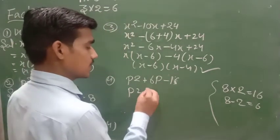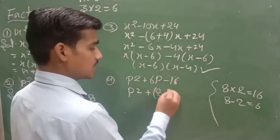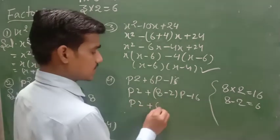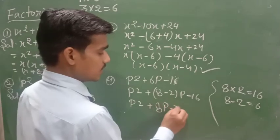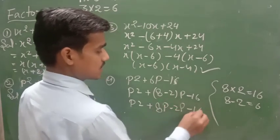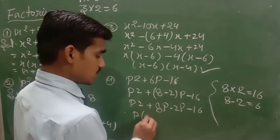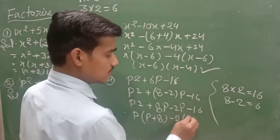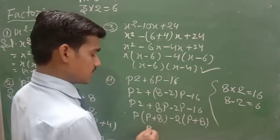So p² + 8p - 2p - 16. p(p + 8) - 2(p + 8). Again p + 8 common: (p - 2)(p + 8).